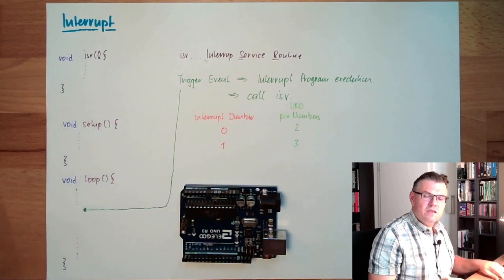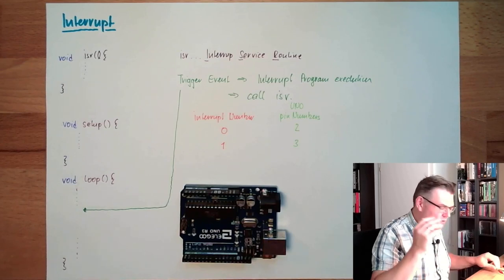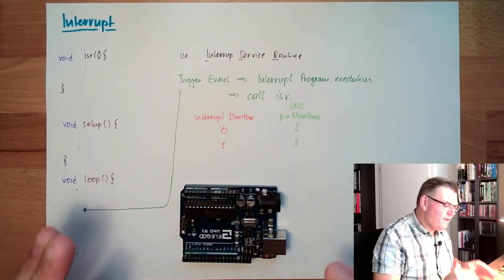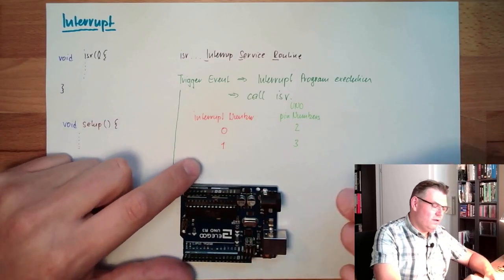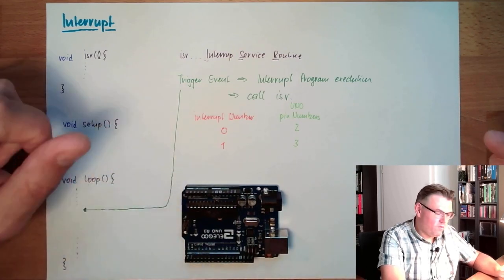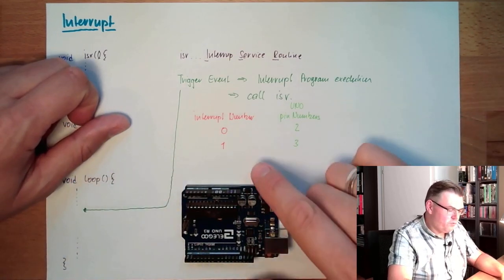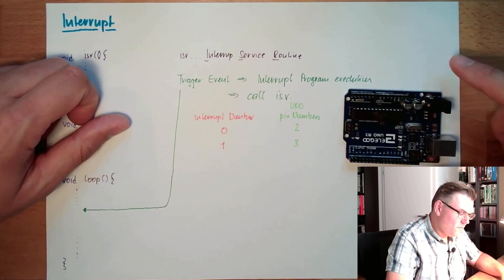On the Mega it looks a little bit different. On the Due it looks different. Depending on the type of Arduino you're using.